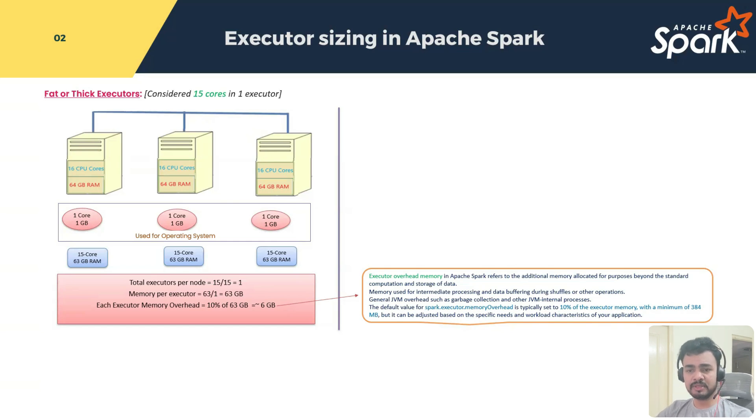Generally, we will calculate 10% of the executor memory, which is minimum 384 and maximum as per the executor memory of 10%. That is why we taken 6 GB. Now, we will get what exactly is the executor memory. Actual memory minus the allocated overhead memory will give you memory for executor.